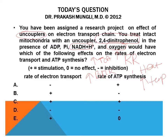There are two kinds of uncouplers: physiological and chemical. The physiological uncoupler is thermogenin, also called UCP1 (uncoupling protein 1). There are four to six types of uncoupling proteins depending on the tissue — they are tissue-specific. Thermogenin/UCP1 is present in brown adipose tissue. Chemical uncouplers include 2,4-dinitrophenol (as given in the question), 2,4-dinitrocresol, and pentachlorophenol.